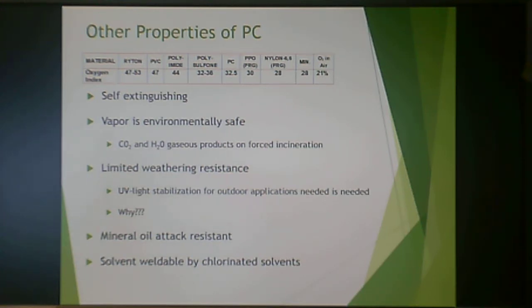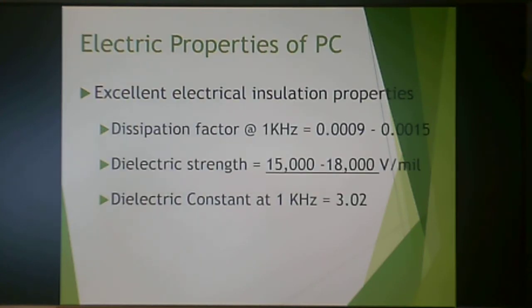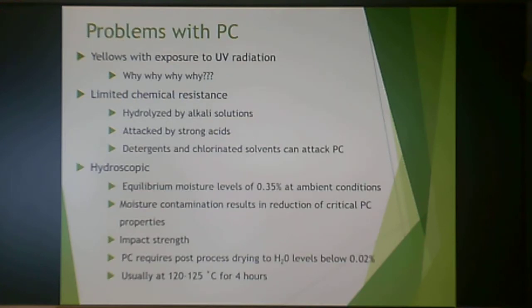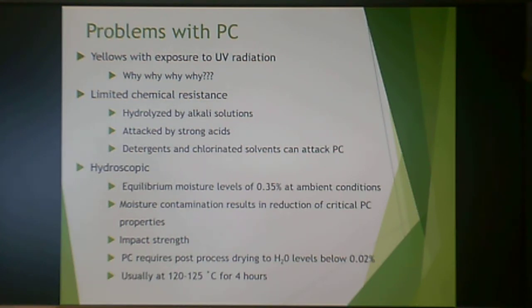Polycarbonate can be attacked by mineral oil, and chlorinated solvents can be used to solvent-weld it — but this also means chlorinated solvents will dissolve polycarbonate if it is soaked in them. It has excellent electrical insulating properties, though not significantly better than lower-cost polymers. A problem is that it yellows because the aromatic rings are targets for atmospheric free radicals, which cause chain scission events, breaking the polymer chain and lowering molecular weight, reducing strength.